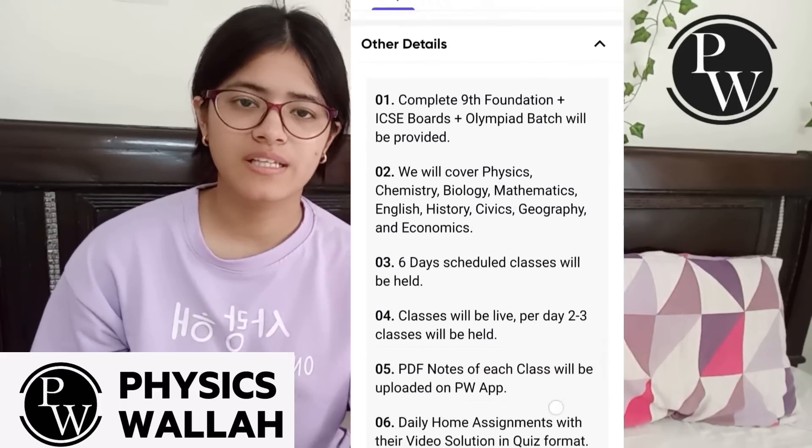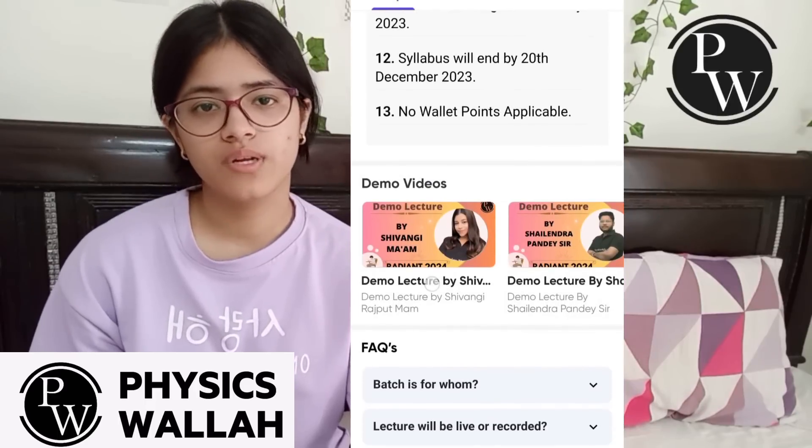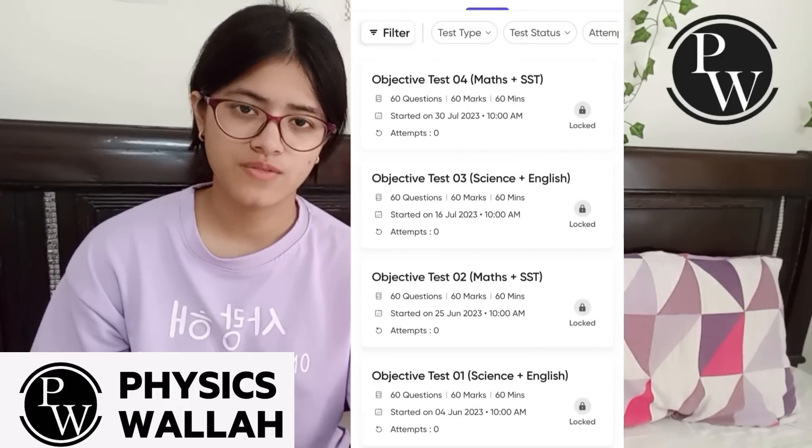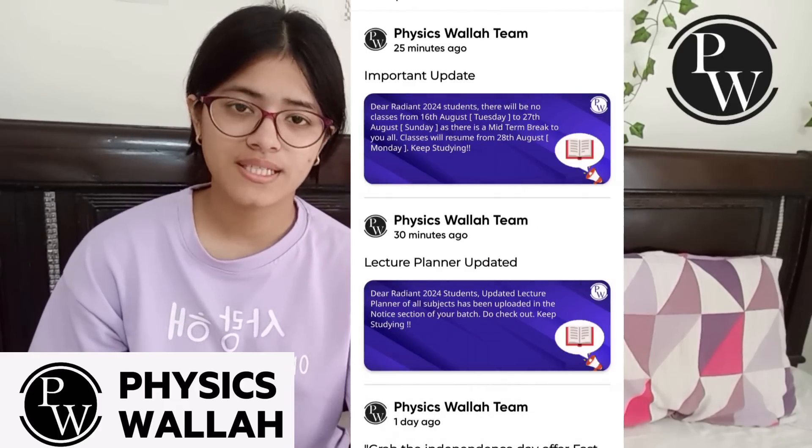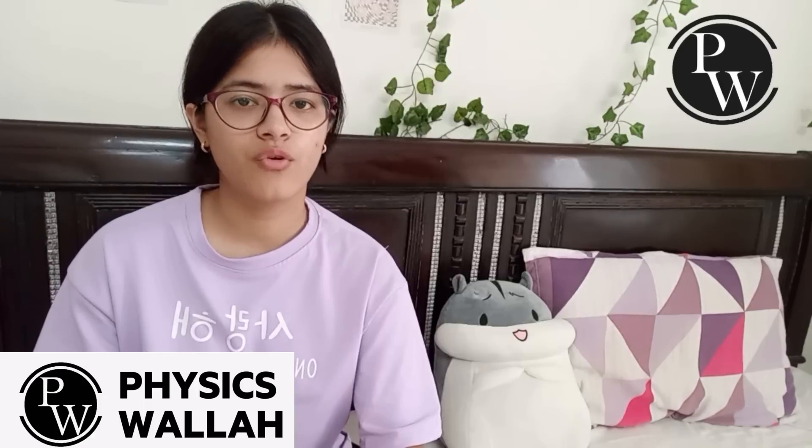There will be 6 scheduled classes. Classes will be live and there will be 3 classes in one day. The complete course will be accessible to all students until June 2024. You will be provided by dedicated subject experts for solving your doubts through best-in-class doubt engine. This batch will be offered on 15 August. It is not 3,499 rupees, it is only 2,500 rupees.